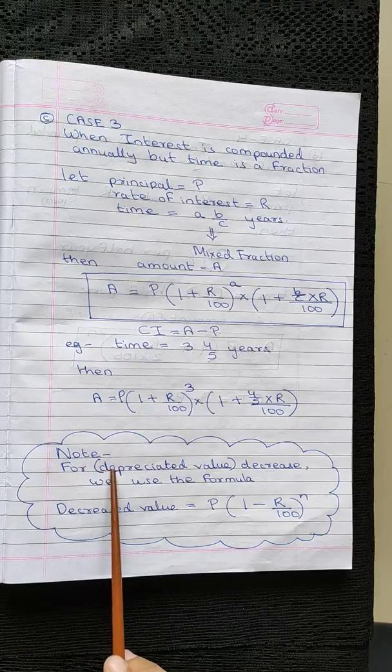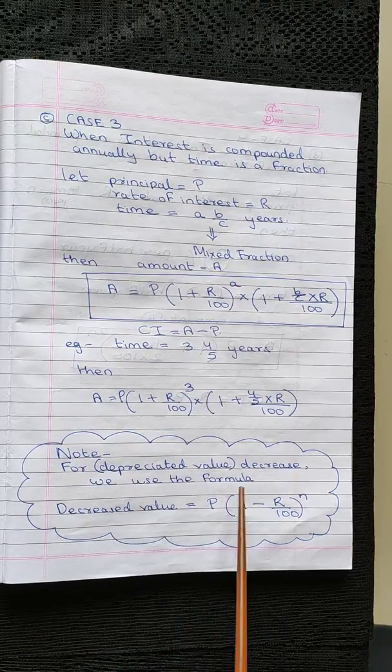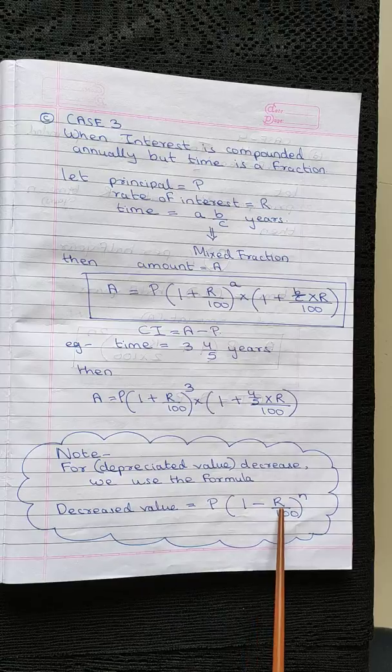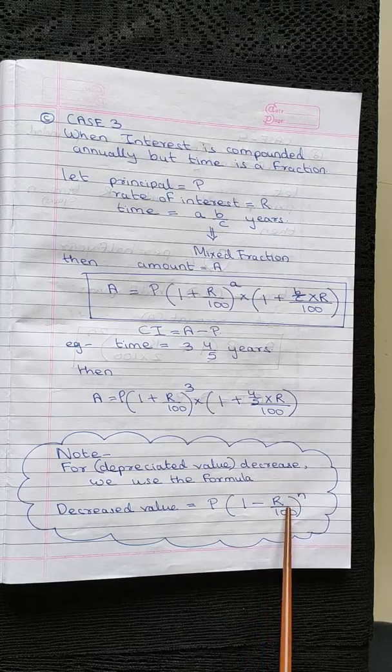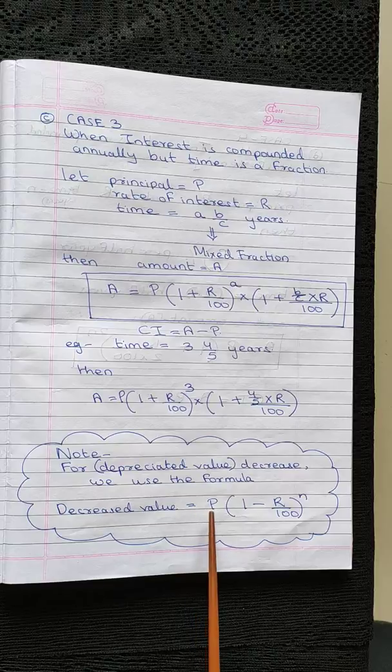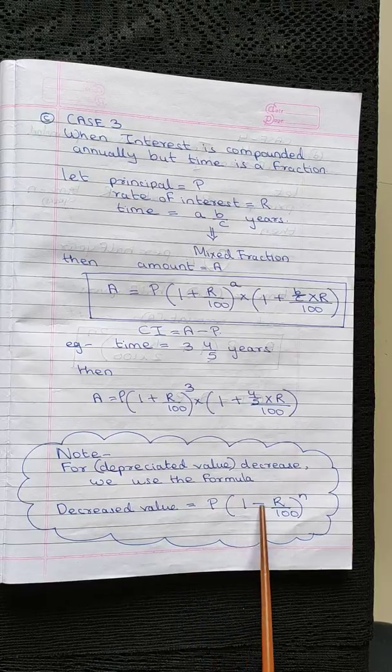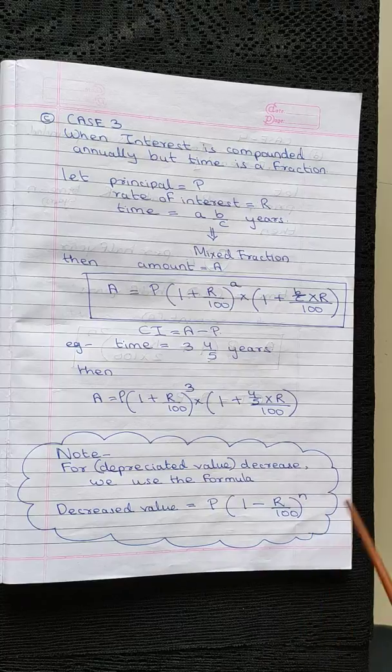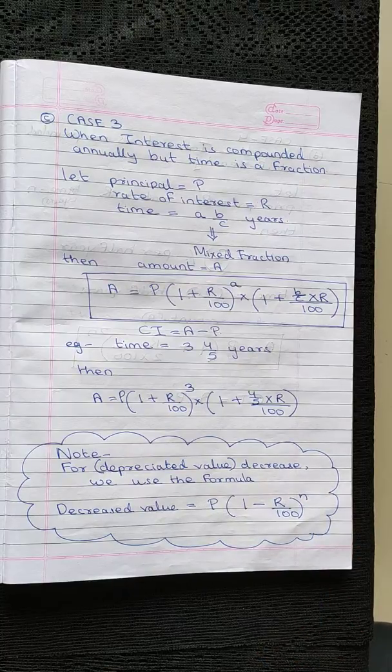Also, for depreciated value, or if the rate of interest is decreasing, or in case of loss, we will consider the negative value of the rate of interest. So the formula becomes P into 1 minus R upon 100, raised to the power N.